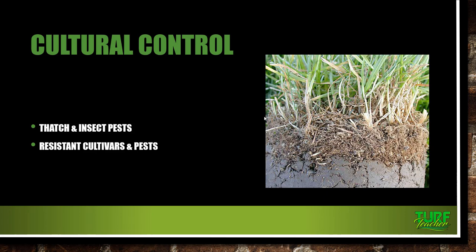You have to remove that thatch. Take a core plug and determine whether you have more than a half inch — anything more than that is problematic. Inspect for thatch, get rid of it, and use resistant cultivars. If you have a chance to put in a new sod installation or a new type of turf grass, you would want to use a cultivar resistant to pests. Most perennial ryegrasses and tall fescues contain an endophyte — a fungus that lives in the plant and actually harms insects, and can kill chinch bugs, bill bugs, and even turf caterpillars.